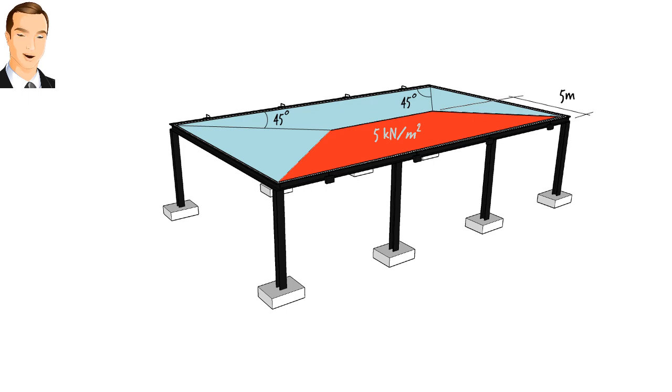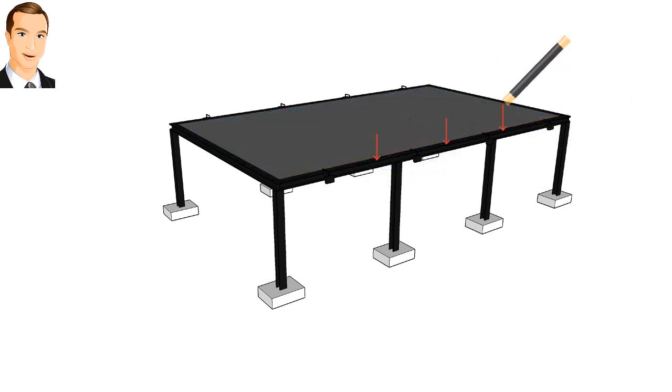This transformation is rather straightforward. All we have to do is multiply the magnitude of the area load, which is 5 kN per square meter, by the height of the trapezoid. Since the height is 5 meters, we end up with a load magnitude of 25 kN per meter.